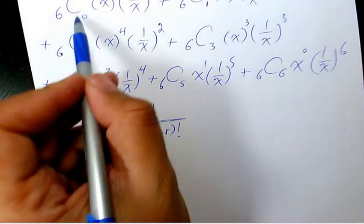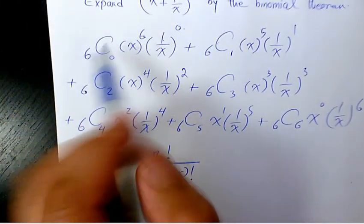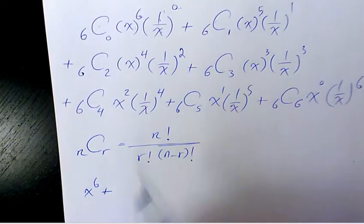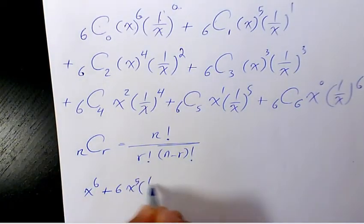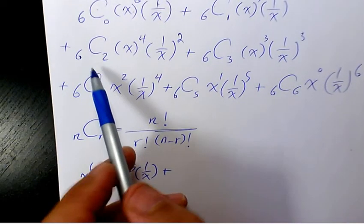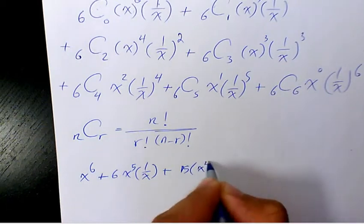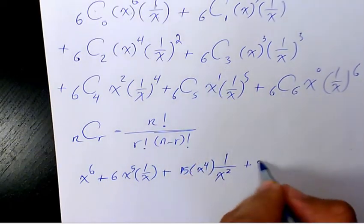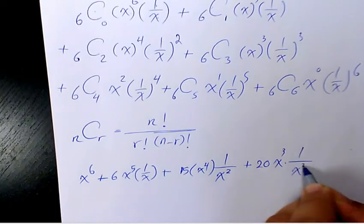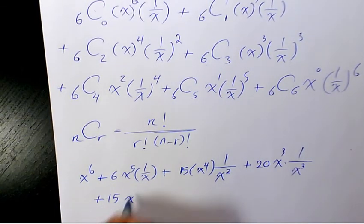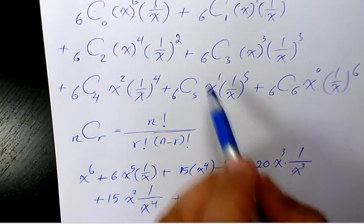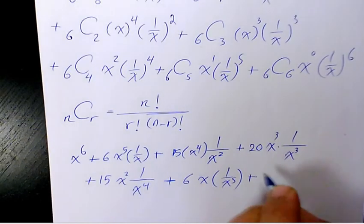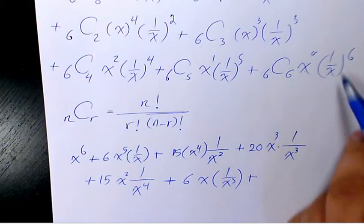Let's start simplifying. The first term is just x^6. Next is 6 · x^5 · (1/x). The third term is 15 · x^4 · (1/x^2). Then 20 · x^3 · (1/x^3), plus 15 · x^2 · (1/x^4), plus 6x · (1/x^5), and finally 1 · (1/x^6).